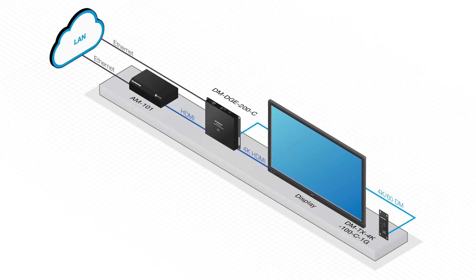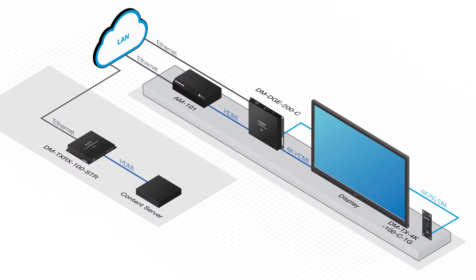Then connect the DMD GE to the LAN to receive H.264 video from any network source. So now we have 4K 60 over DM, or HDBaseT, wireless over HDMI, and network video over H.264.